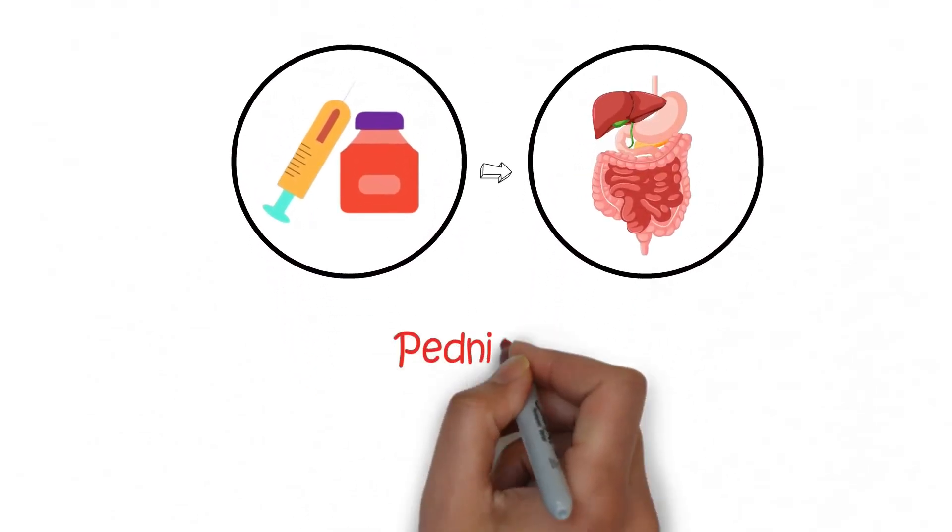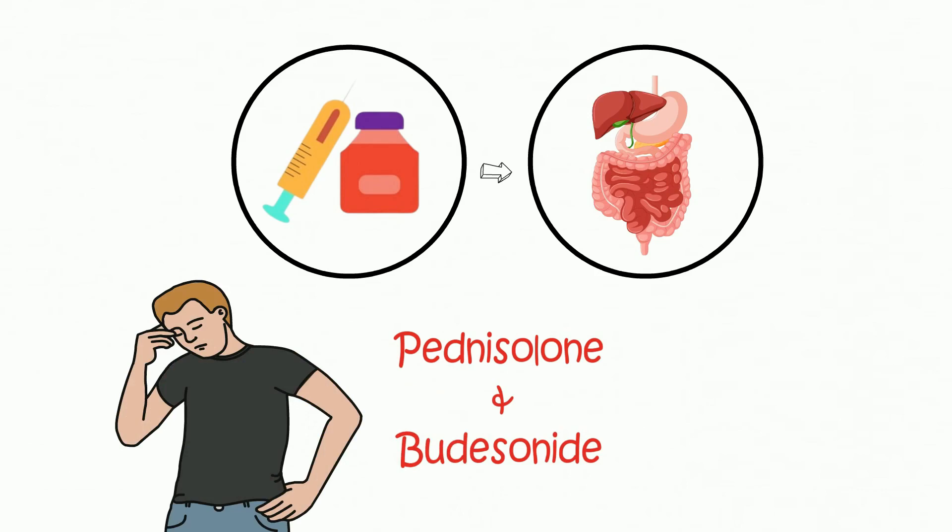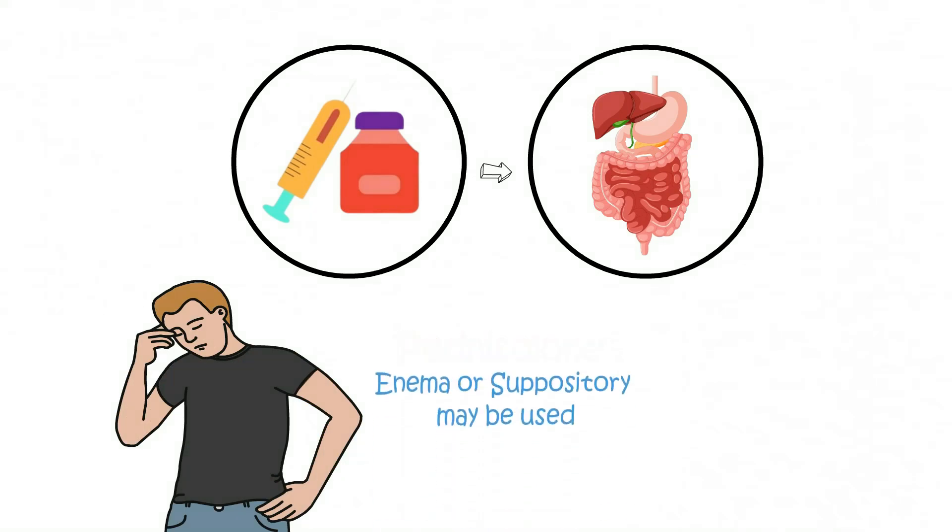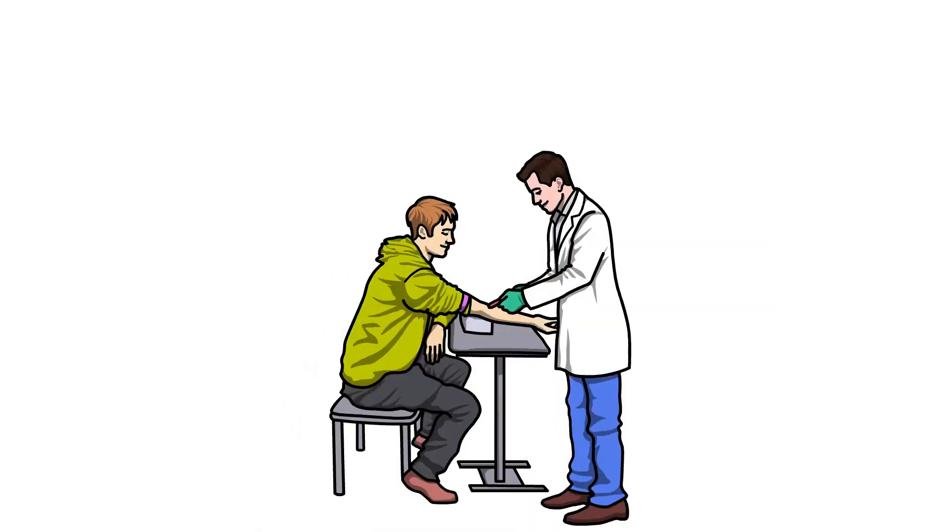Steroids such as prednisolone and budesonide are normally used during flare-ups. Long-term steroid use is not recommended due to the long-term complications that they can cause. In some cases, an enema or suppository may be used if only the lower end of the colon is affected, such as the rectum. In severe flare-ups, steroids may be administered through the vein.